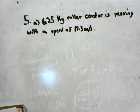Okay. Introduction to kinetic energy problem set. Answer the following problem for number five. A 625 kg roller coaster is moving with a speed of 18.3 meters per second.